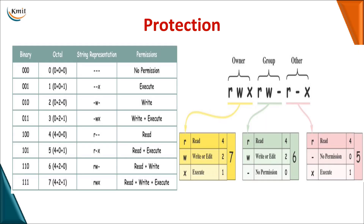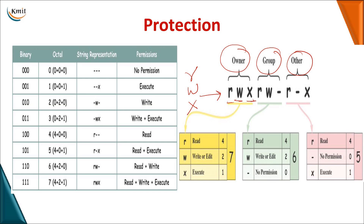In Unix operating systems, we have these three types of users: owner, group, and others. The types of access a user can perform are read, write, and execute — represented as R, W, and X respectively.